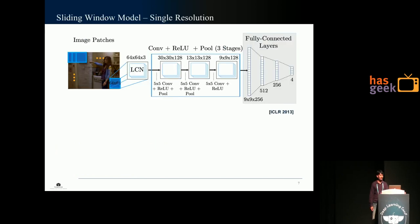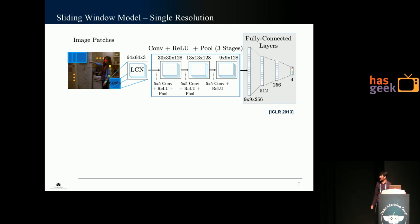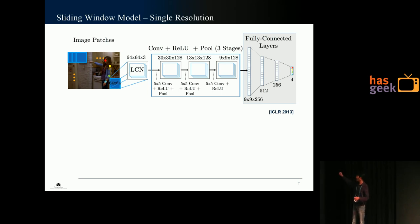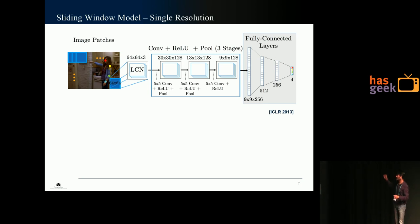We started with a very simple convolutional neural network based architecture. The input to the network is a patch and the output is four confidence values corresponding to the four parts we want to detect — for example, the shoulder, wrist, elbow, and the point between the eyes. At training time we show the network different patches: if the patch is centered at the face, the red value should be high; if centered at the elbow, the green value should be high; if centered at the wrist, the blue value should be high; if centered at the background, all values should be low.